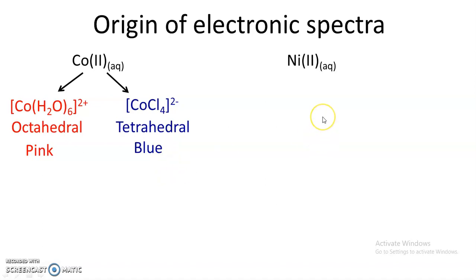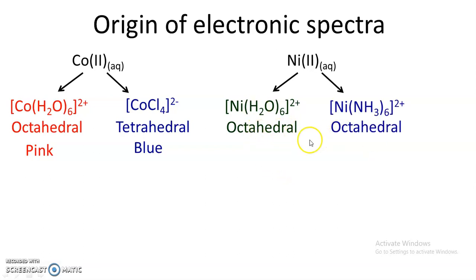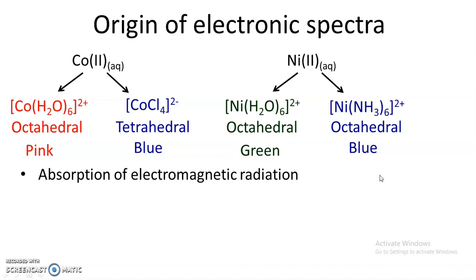Consider another example: when nickel 2+ forms a complex with water, that is hexa aqua nickel 2+, this octahedral complex is green in color. Whereas when nickel 2+ forms a complex with amine, that is hexamine nickel 2+, it is blue. So the same metal ion forms two different colored complexes — its aqua complex is green whereas its amino complex is blue.